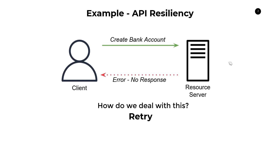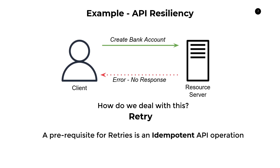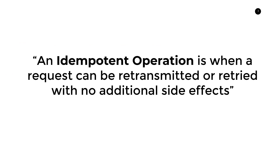That's not what we wanted — we only wanted one bank account. So this is a big problem. We want to build resilient APIs by supporting automatic retries, but a prerequisite for retries is an idempotent API operation. An idempotent API operation is when a request can be retransmitted or retried with no additional side effects. In the context of our example, you call multiple times, but you still only get one bank account at the end of the day.